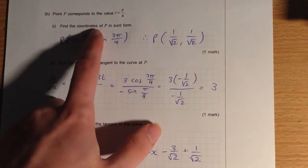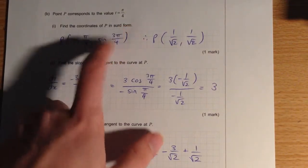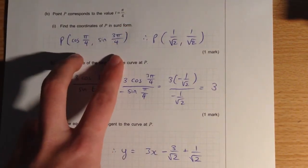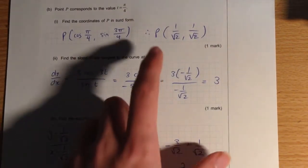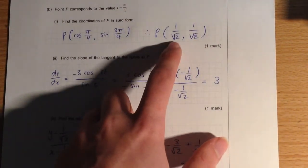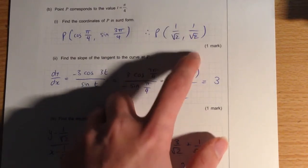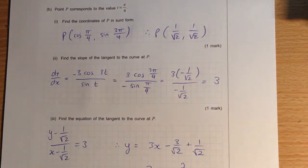From this, we find that the coordinates of the point P in surd form, we use our unit circle, or we remember the actual values from the unit circle, and we know that we're going to end up with 1 on square root 2 and 1 on square root 2 as being that point.